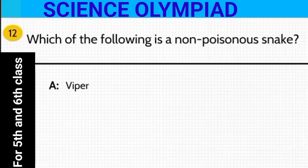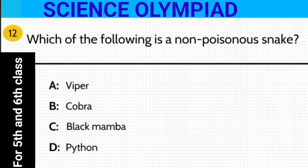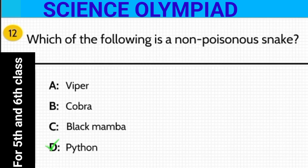Which of the following is a non-poisonous snake? Is it viper, cobra, black mamba, or python? The answer is python — python is not a poisonous snake.